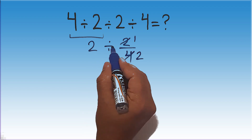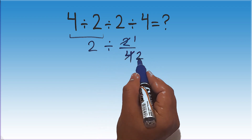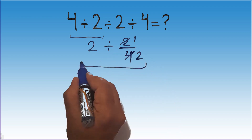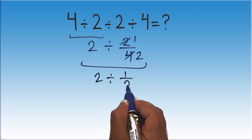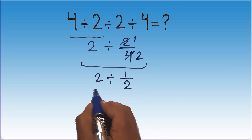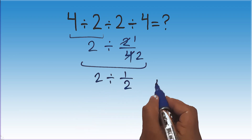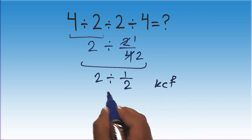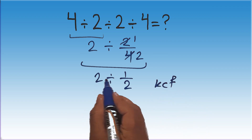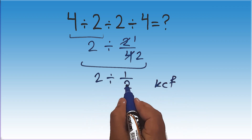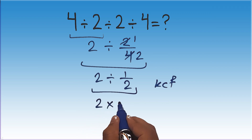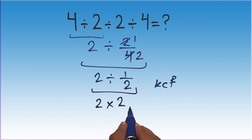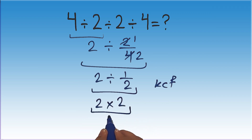So, 2 divided by 1 over 2. According to the KCF rule, 2 divided by 1 over 2 can be written as 2 times 2. And this is equal to 4. Well, this answer is not correct.